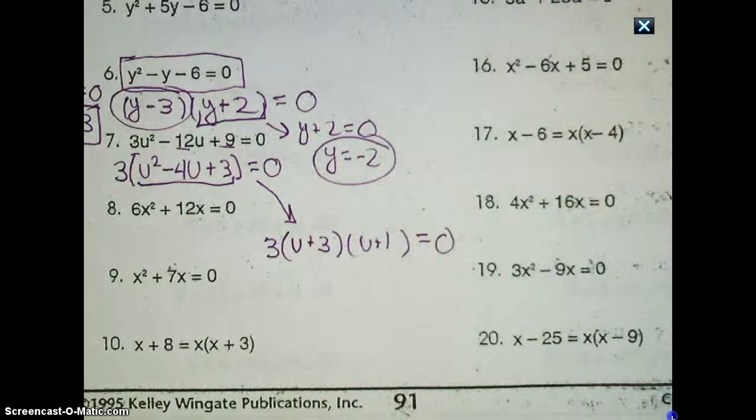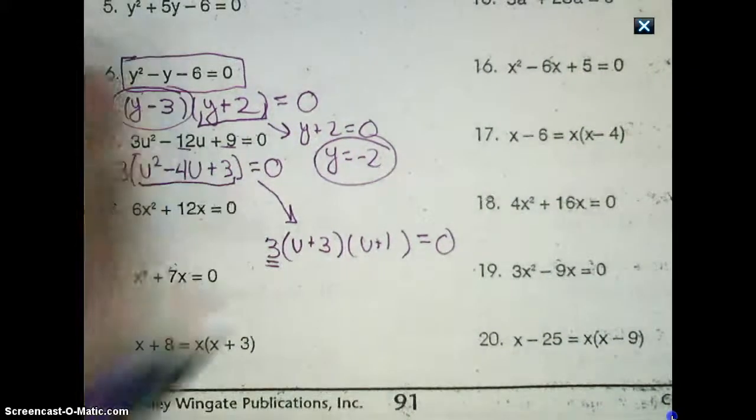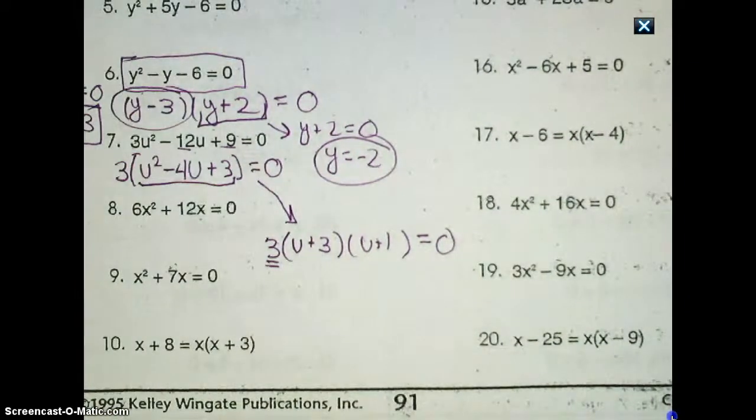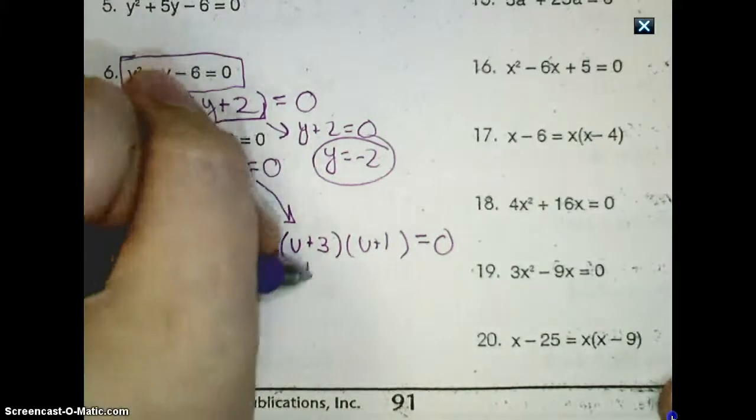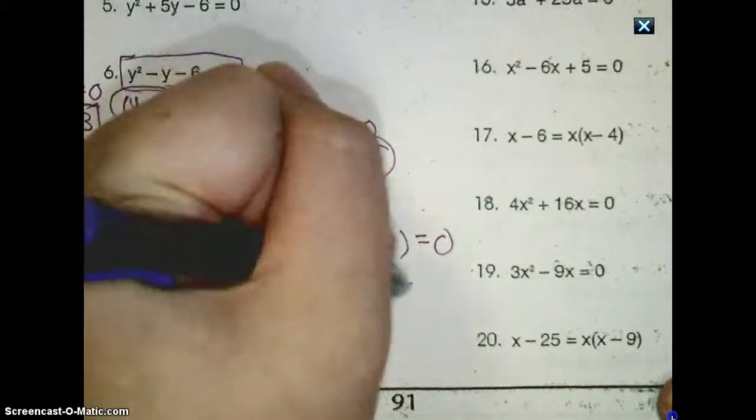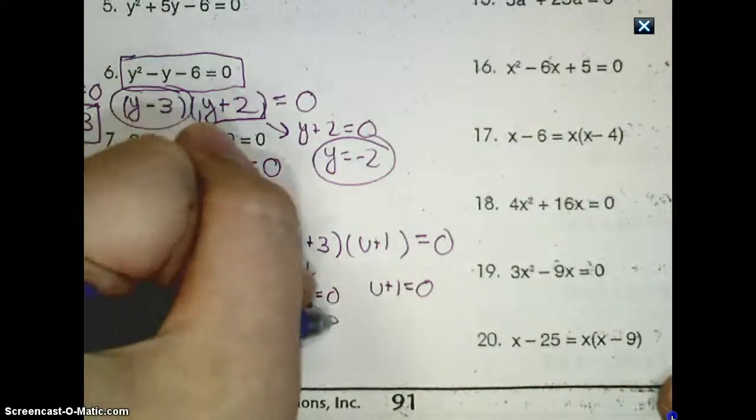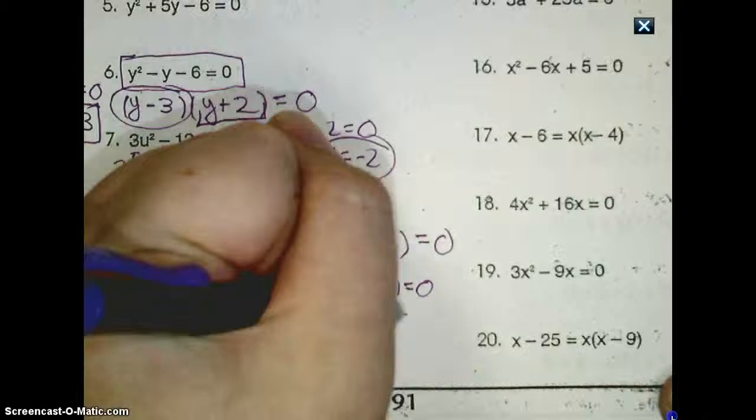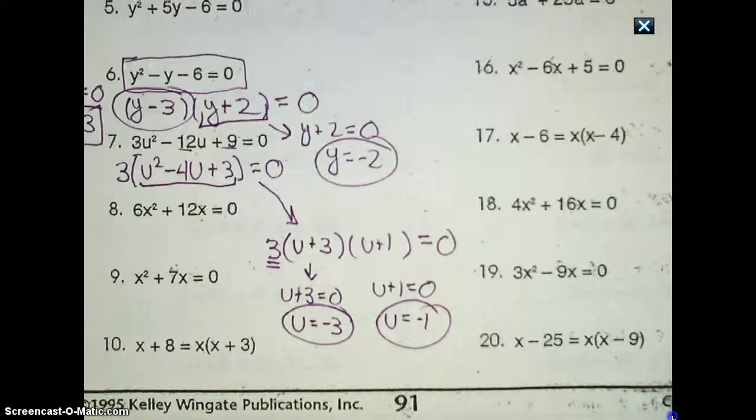I'm now going to check each variable factor, and I say variable factor because you don't have to check three, because three, there is no way three could ever equal zero. No need to check that, but I would want to check this. u plus three is equal to zero, u plus one is equal to zero. And upon solving each of these, I get u equals negative three, and u equals negative one.